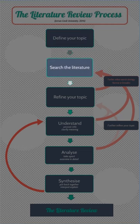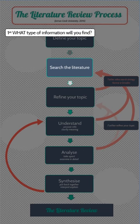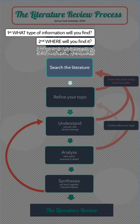Searching the literature. Having a well-developed search strategy is key to putting together a great literature review without wasting time. Before you start your search you'll need to consider three things: firstly, what type of information you'll find; secondly, where you'll find it; and thirdly, how you'll extract it. Going through the motions of creating a formal search strategy is really important as it makes you focus on the core concepts of your topic.